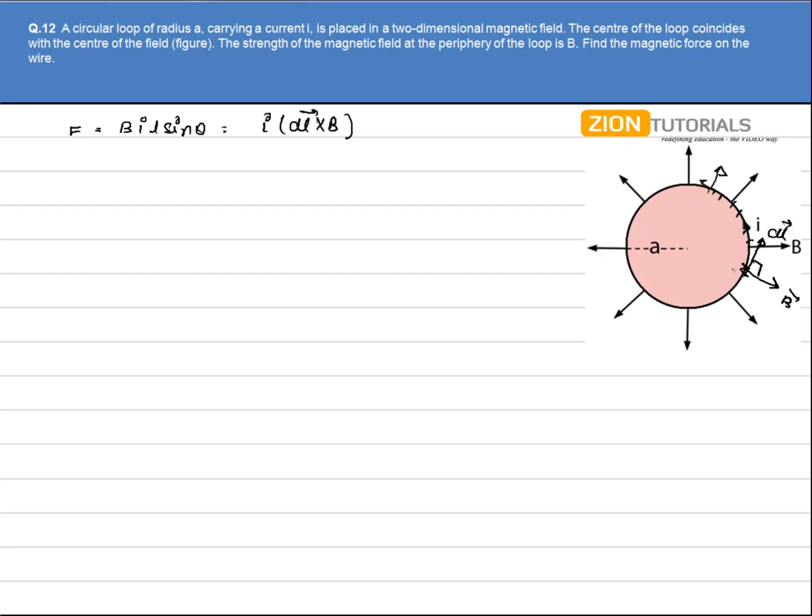So if I integrate this DL vector over throughout its circumference then what I'll get is the current into the total length because DL vectors add to make up the circumference of the circle. So total length of DL will be 2 pi A and of course magnetic field is always perpendicular. So sin theta will be 90.